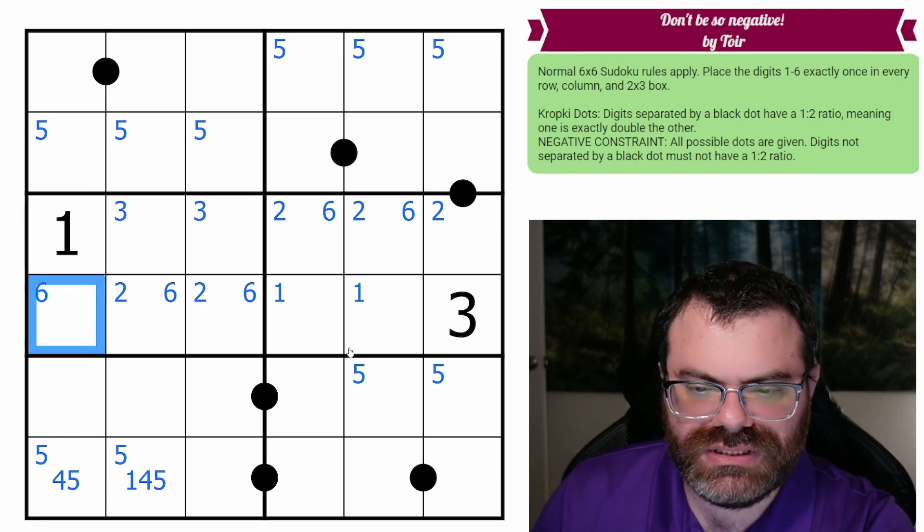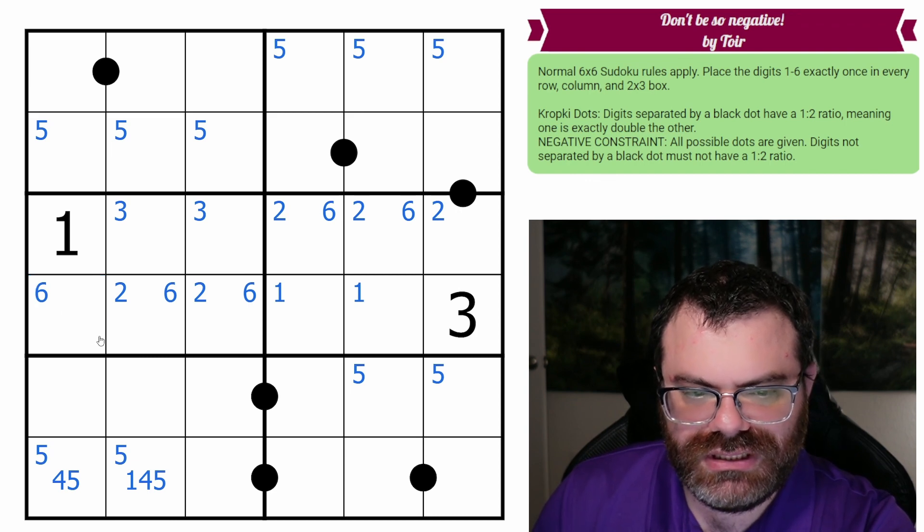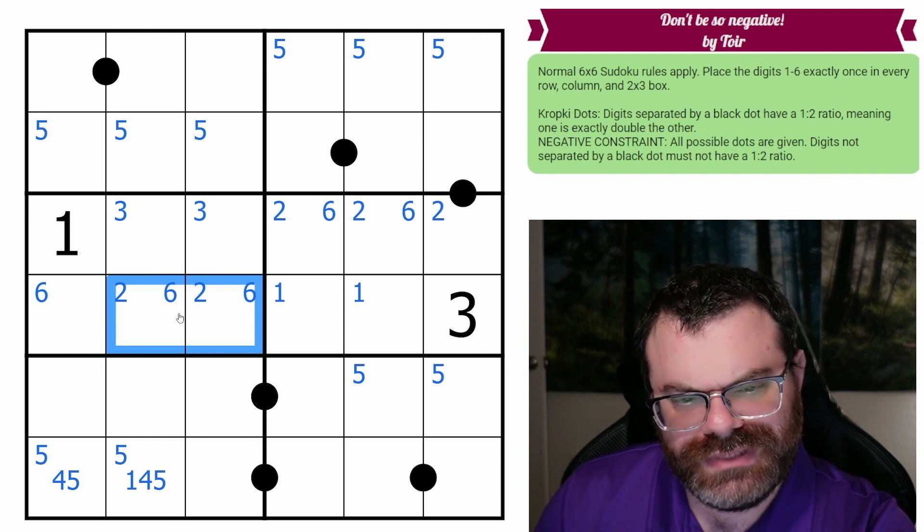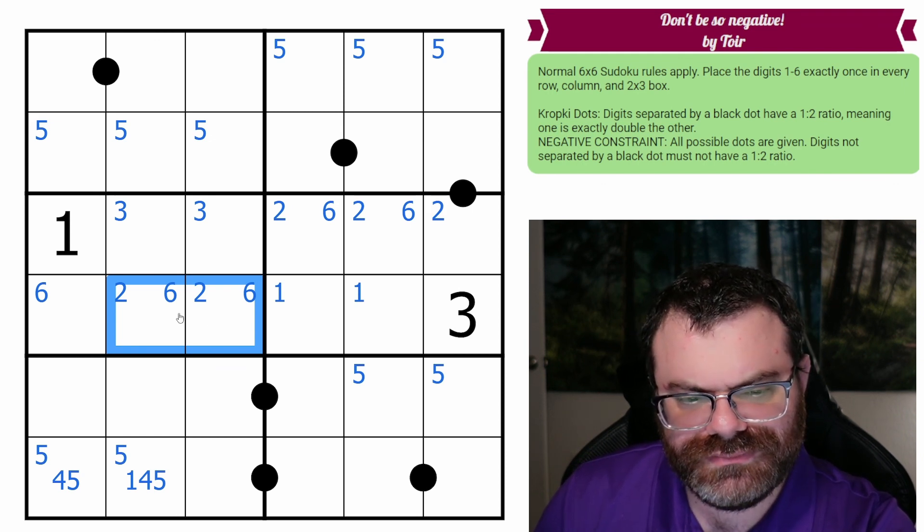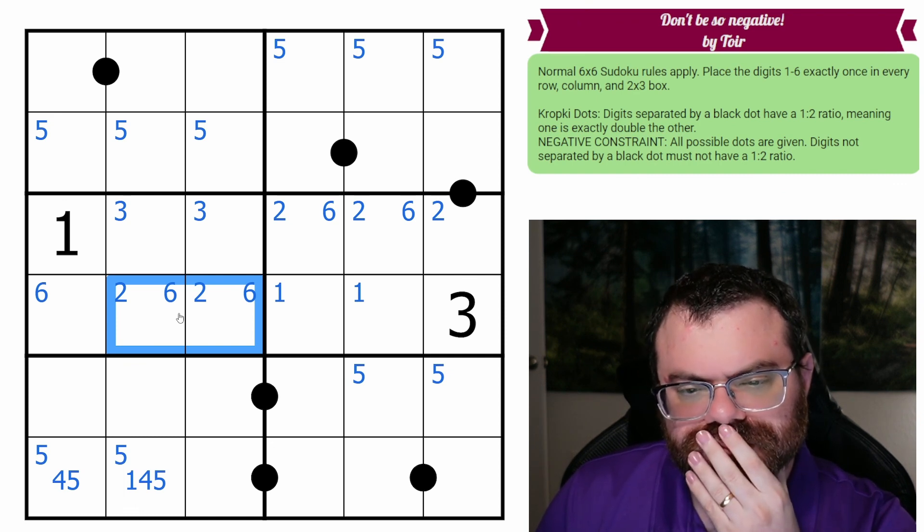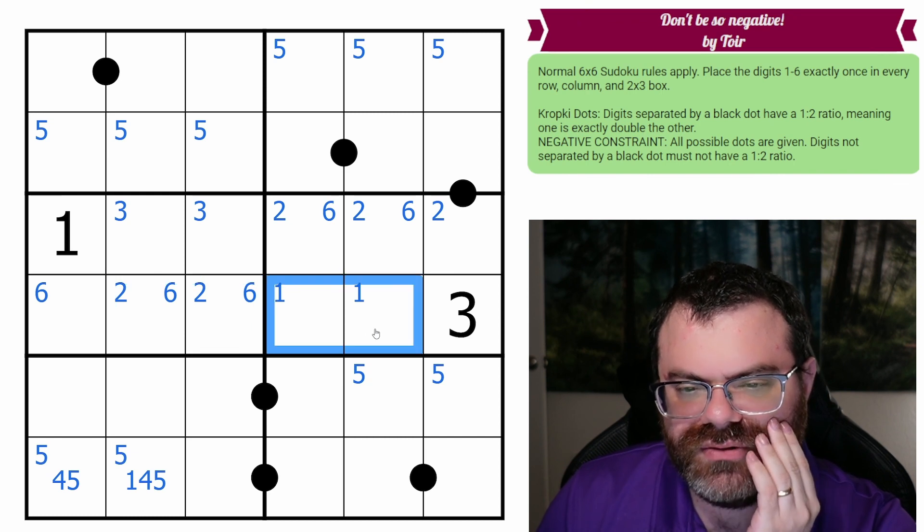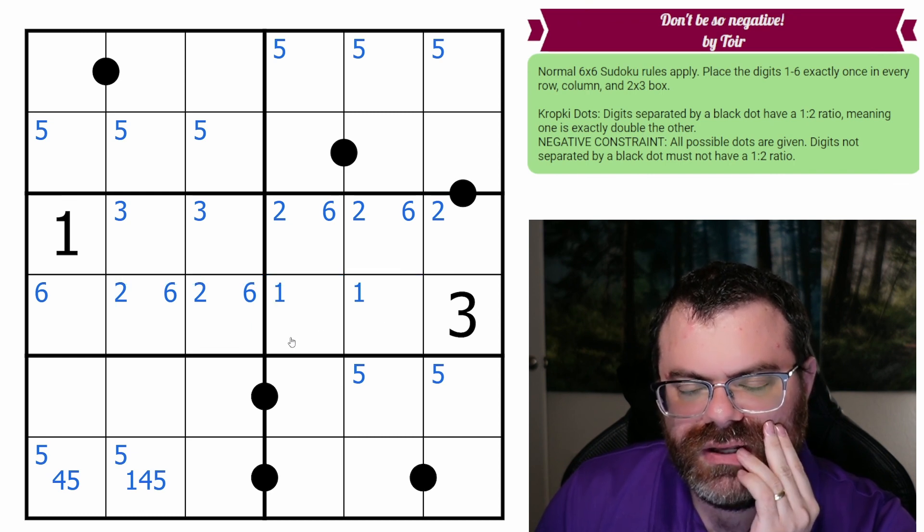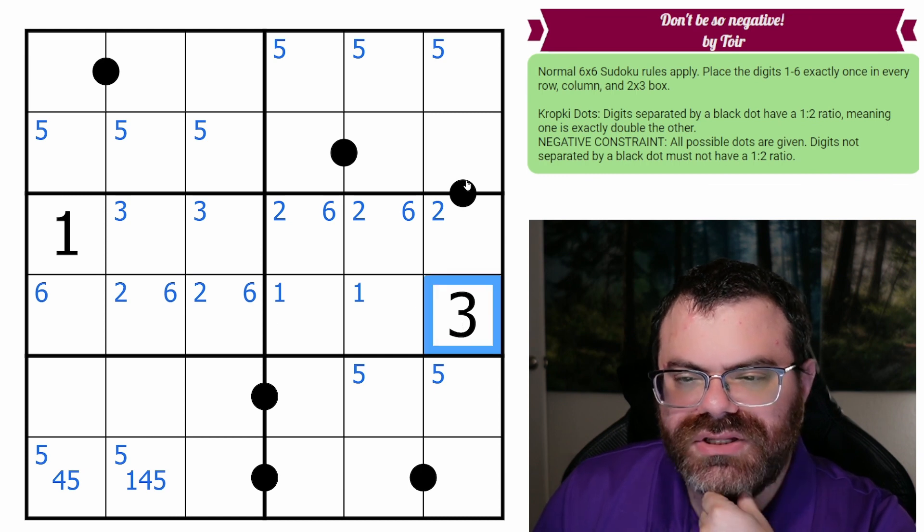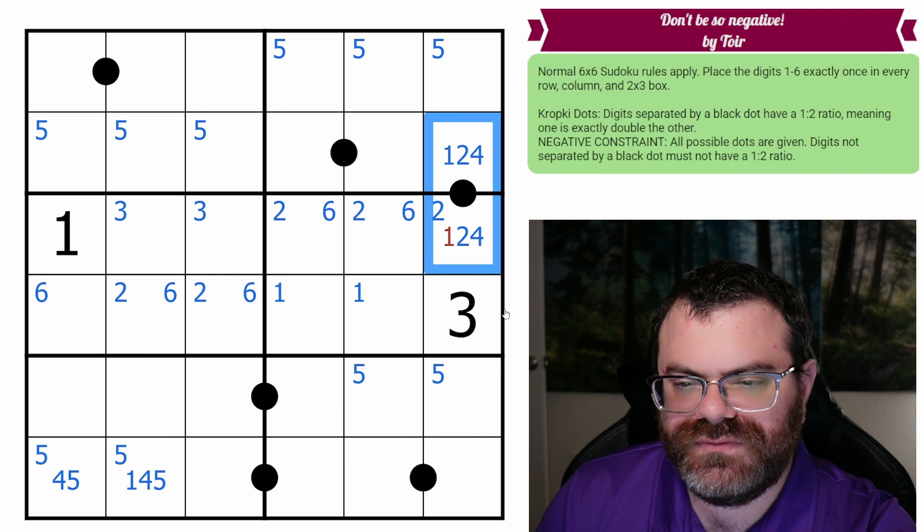So we can't put a four in one of these two. I'm not sure how helpful that is. I was thinking about whether we can put a four over here, but I don't see why not. There's a three in this column. So this is from one, two, four, and it definitely has a two on it.